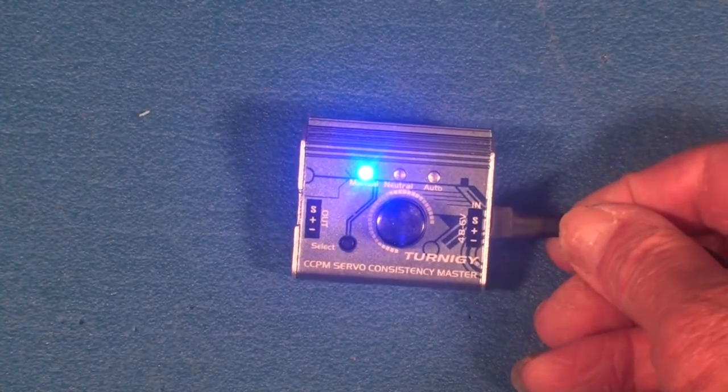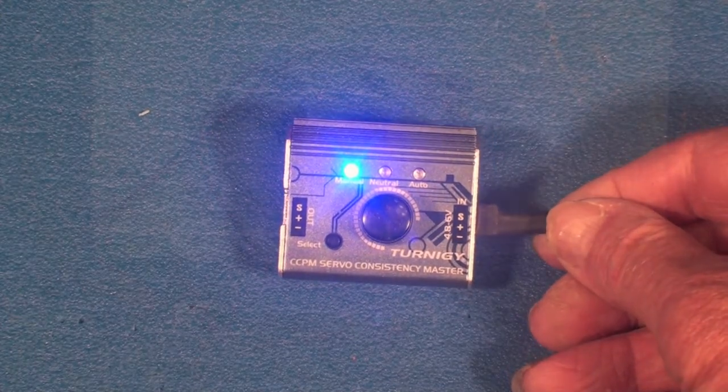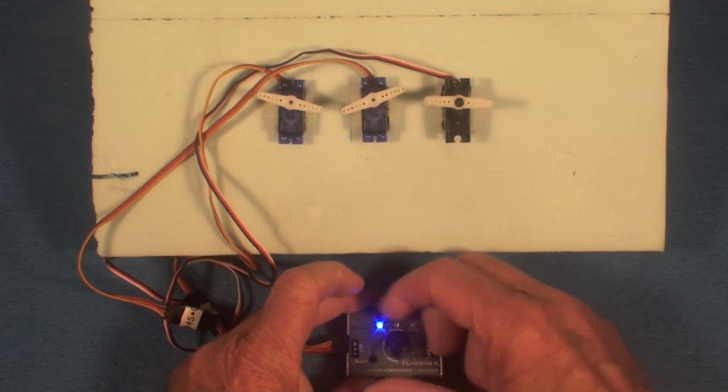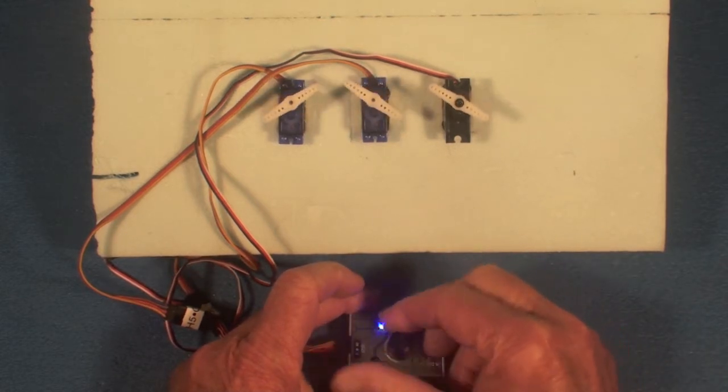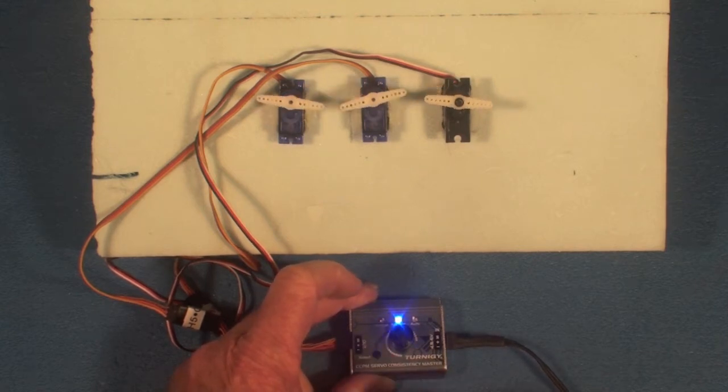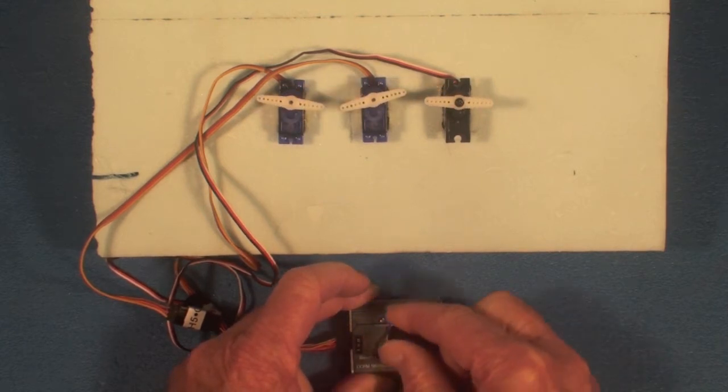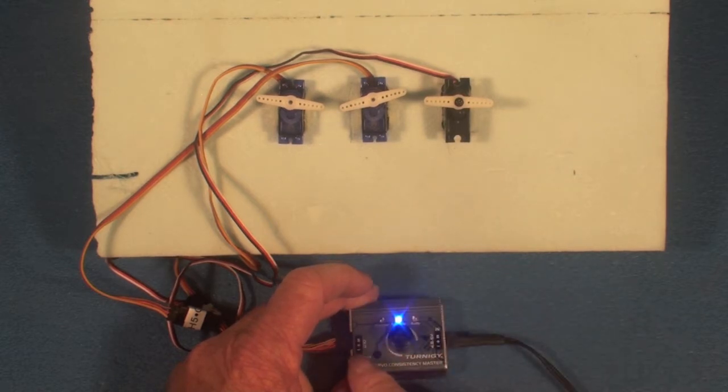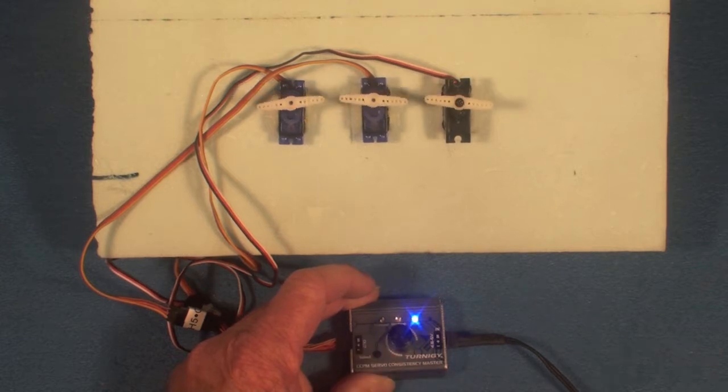Here I show how I control the servos with the tester. You can set it on manual where you can adjust all the servos, then I go to neutral which centers the servos, and then the last one is auto where it'll cycle the servos.